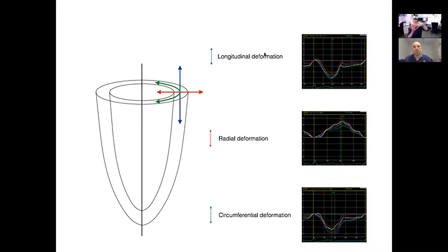Circumferential strain measures how the heart contracts down as it twists. In that plane, the kernels actually get closer together as the heart twists, so the strain value is negative — similar in sign to longitudinal strain.